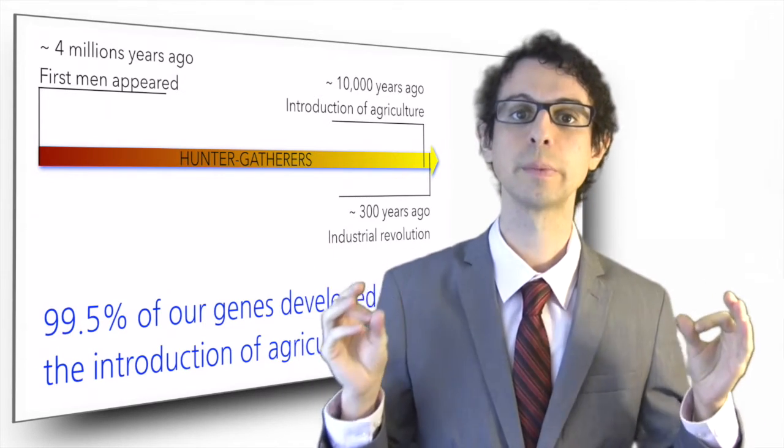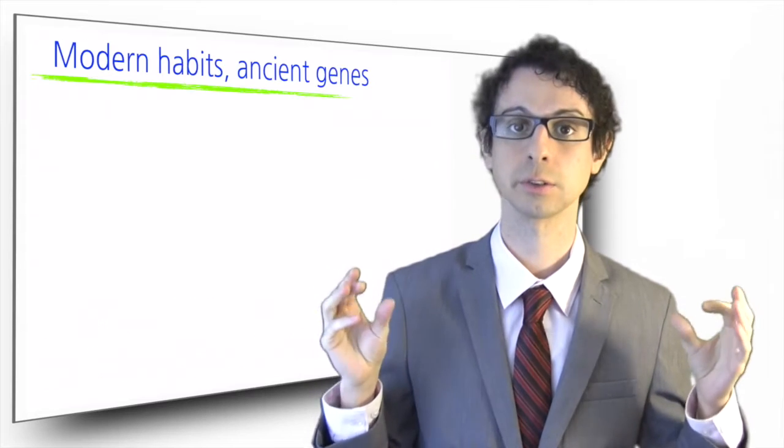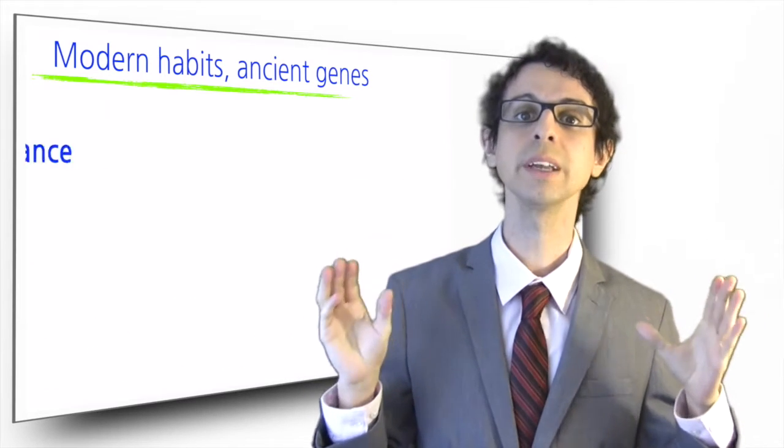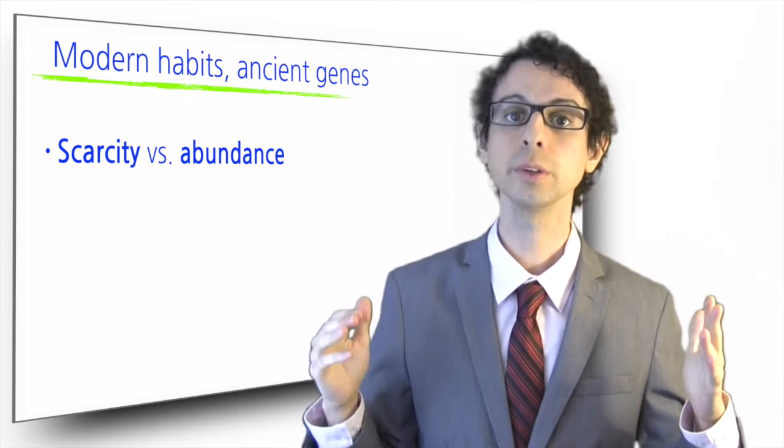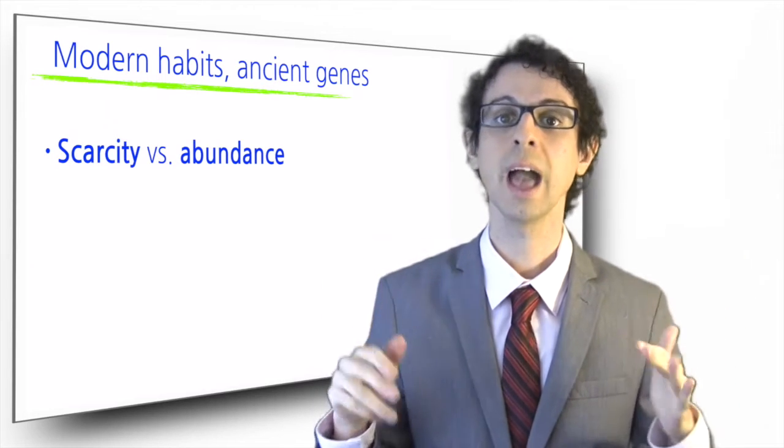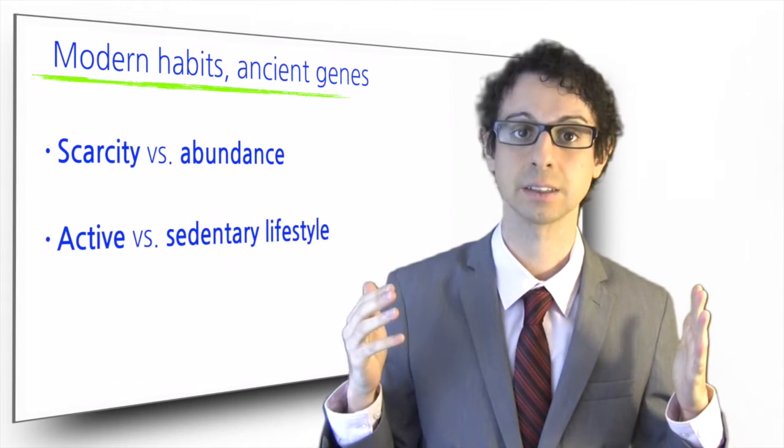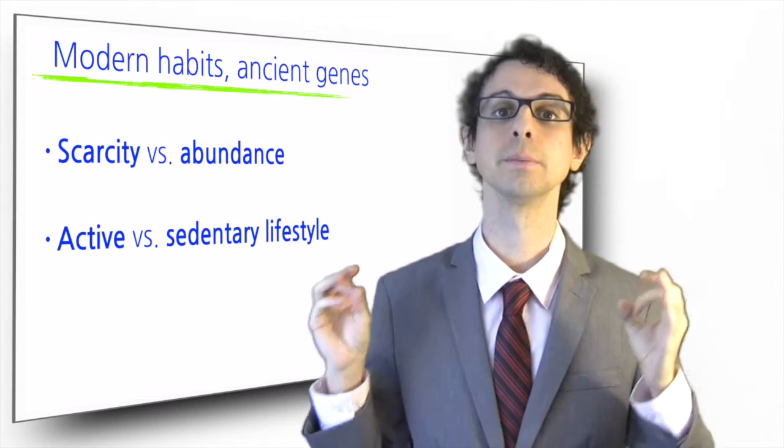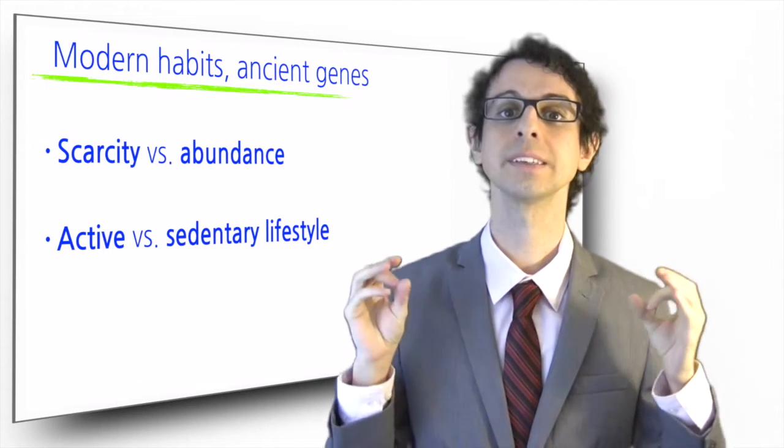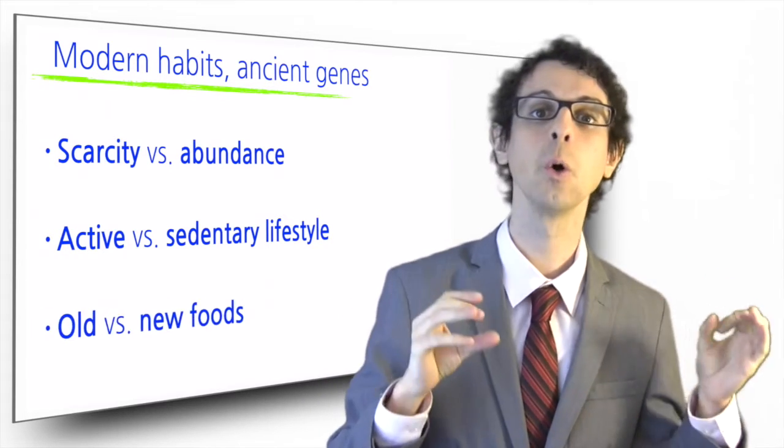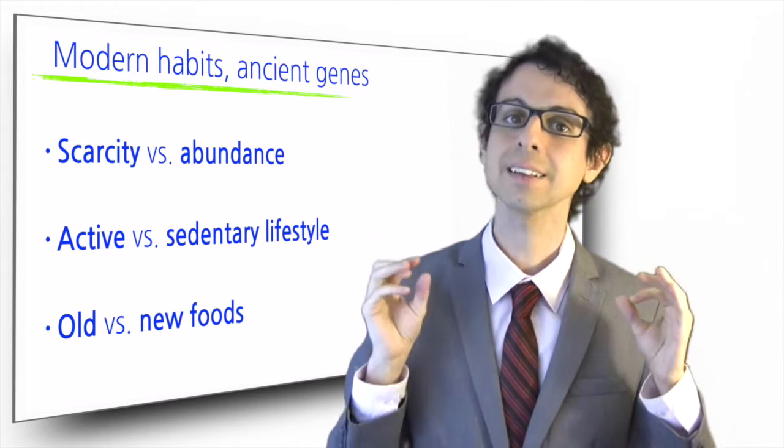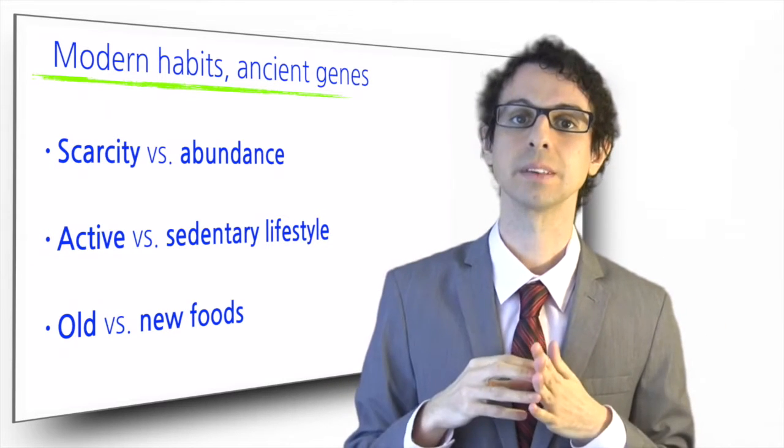If we were to compare ourselves with our ancestors, we would easily spot three very noticeable differences. We eat more food, we eat different types of food, and we're way less physically active. Scarcity versus abundance, active versus sedentary lifestyle, and old versus new foods. Let's examine these three themes more in detail.